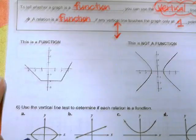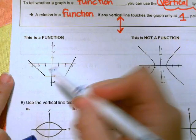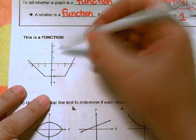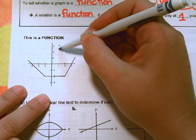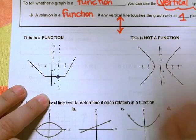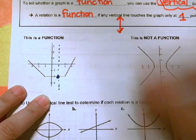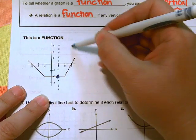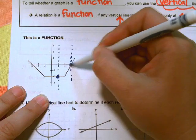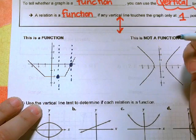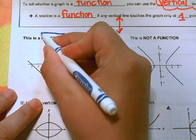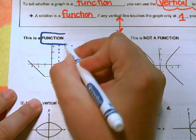If we take a look at this graph here, if I draw an imaginary vertical line, it only hits the graph once. No matter where I draw the line, it only touches the graph once. So that's why this is considered a function.